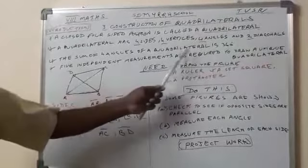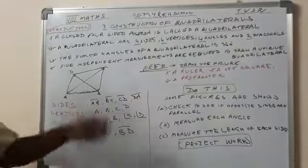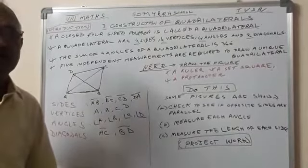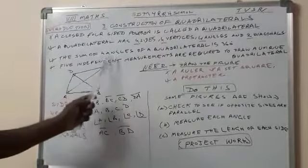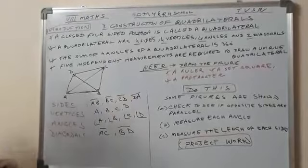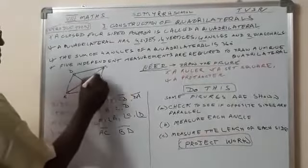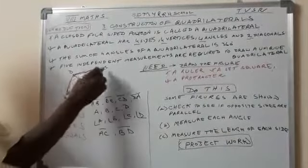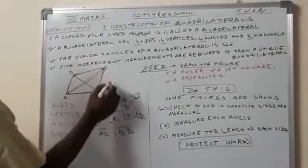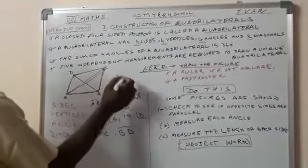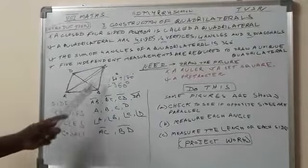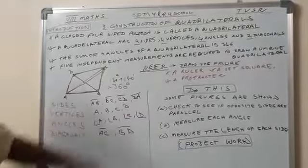The sum of angles of a quadrilateral is 360 degrees. The sum of three angles of a triangle is 180 degrees. Then, the sum of four angles of a quadrilateral is 360 degrees. Now, this quadrilateral has two triangles. So, the sum of four angles is 360 degrees.